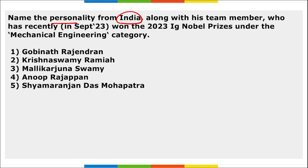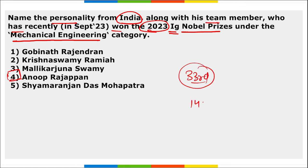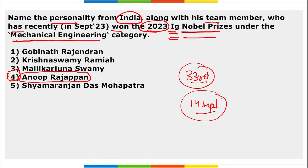Name the personality from India who recently won the 2023 IG Nobel Prize under the Mechanical Engineering category. The answer is Anoop Rajappan. The 2023 IG Nobel Prize was awarded at the 33rd Annual IG Nobel Prize ceremony on 14th September. The IG Nobel Prize is given to honour humorous scientific feats, and aims to honor achievements that first make people laugh and later make them think about individual contributions.